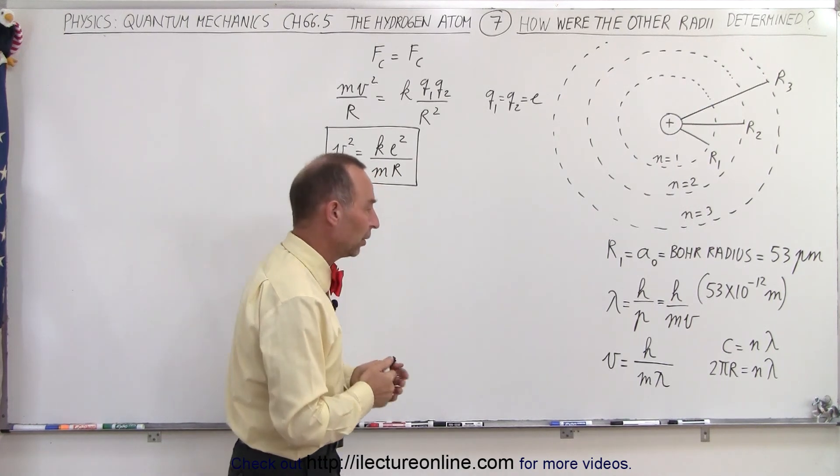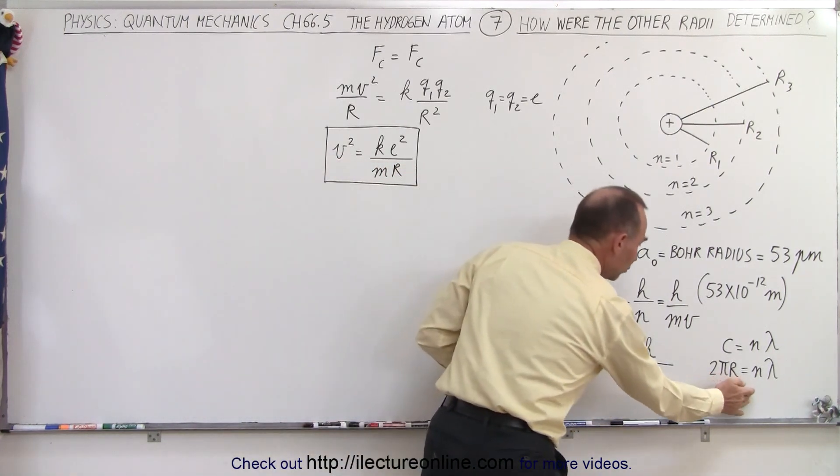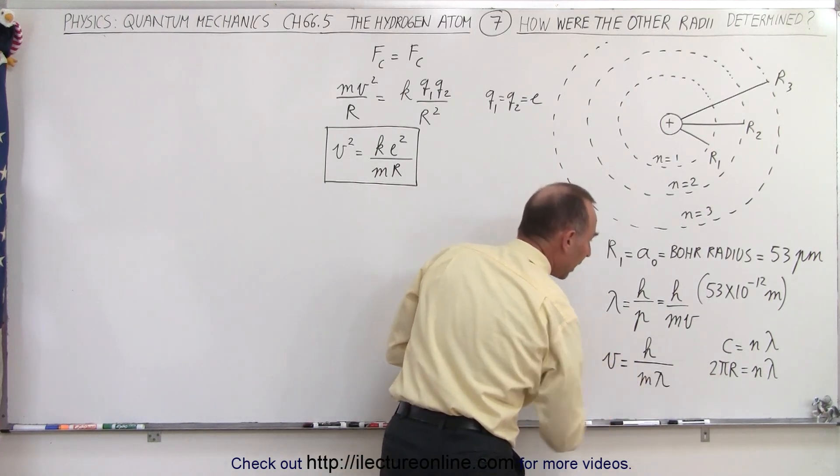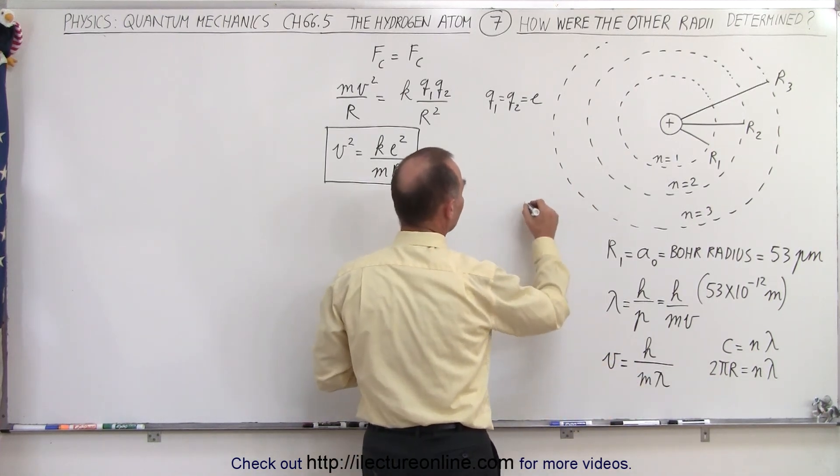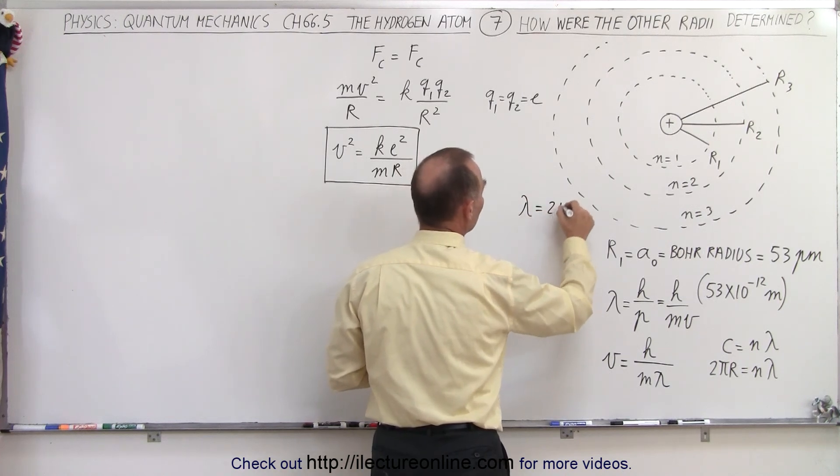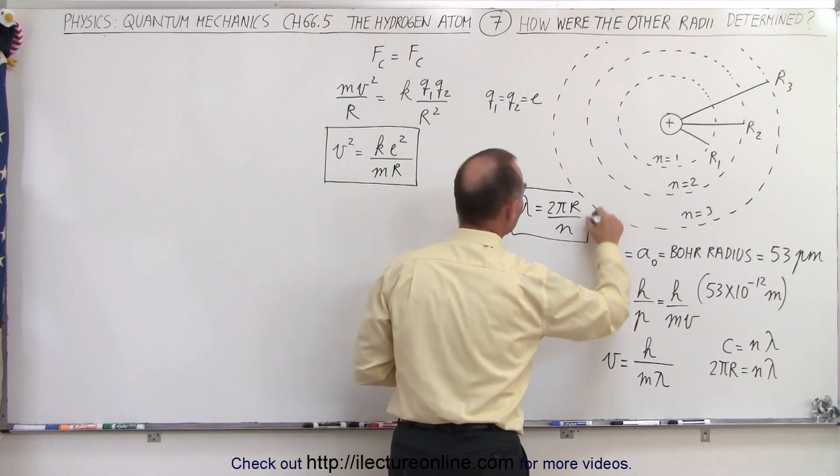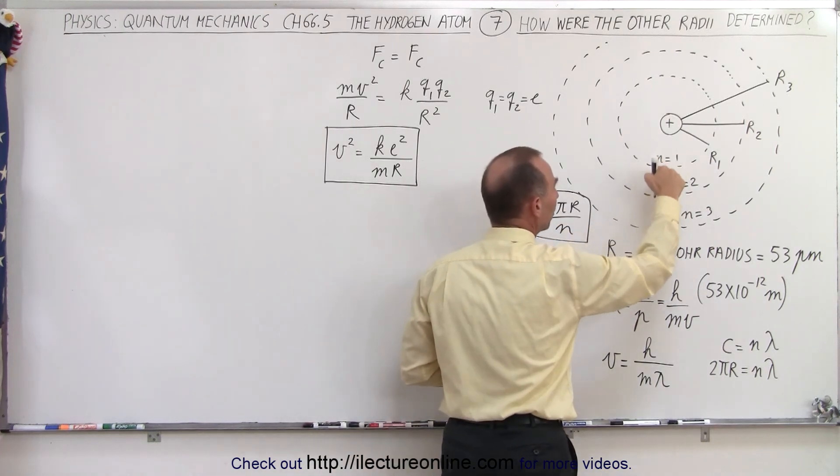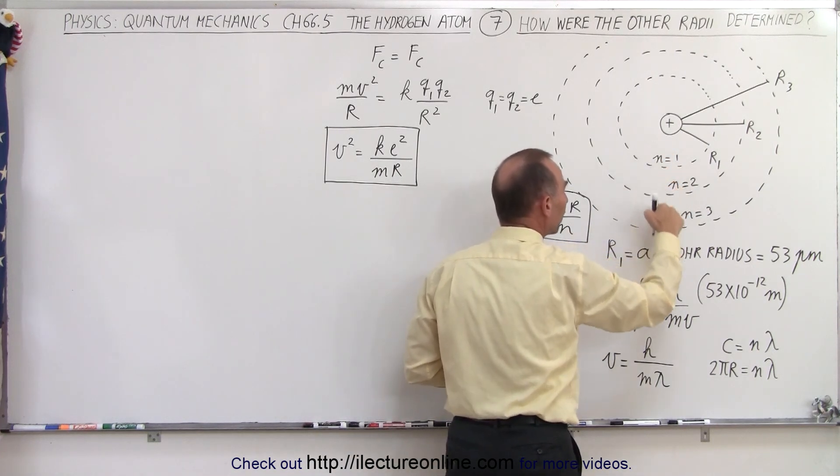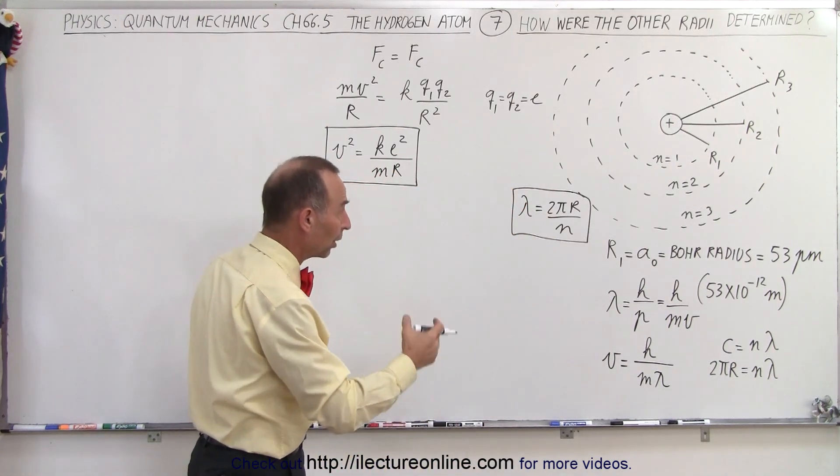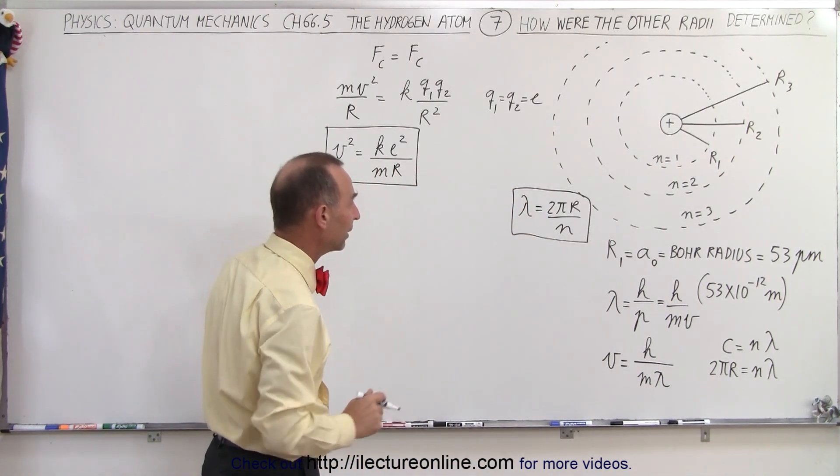So using this, what we can do is replace lambda by being 2πr over n. So we're going to write that lambda is equal to 2π times the radius divided by n, and n representing the integer number representing the various orbits around the nucleus, which later on we'll realize will become one of the quantum numbers of the atom.